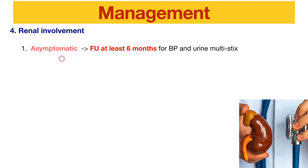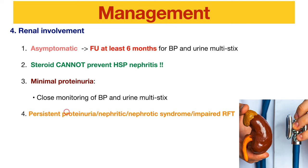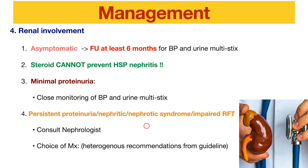For kidney involvement: if no renal presentation, follow up for at least six months monitoring blood pressure and urine dipstick. Note that steroids cannot prevent HSP nephritis. For minimal proteinuria, close monitoring of blood pressure and urine dipstick at regular intervals. For persistent proteinuria, consider renal biopsy and consult a nephrologist. For severe presentations — nephritic or nephrotic syndrome, or impaired renal function — consult a nephrologist. Treatment options include ACE inhibitors to decrease proteinuria, steroids, and immunosuppressants, though guidelines vary.